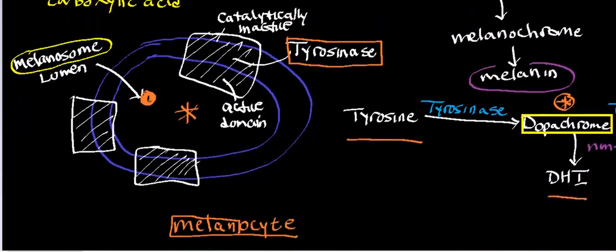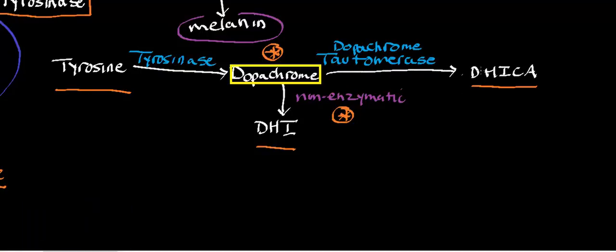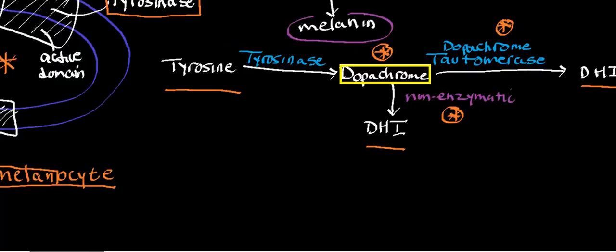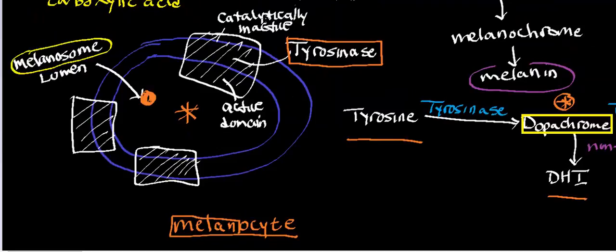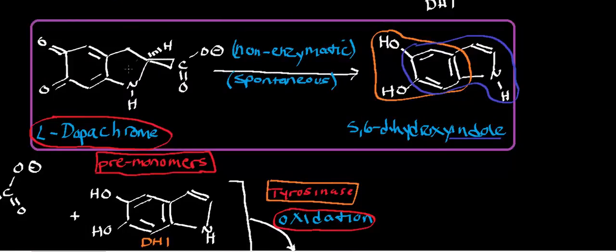That's the reaction in which we go from dopachrome to one of our premonomers, dihydroxyindole. We also have another reaction catalyzed by dopachrome isomerase or dopachrome tautomerase, in which we go to the other product, dihydroxyindole carboxylic acid. The synthesis of this molecule and the mechanism of dopachrome tautomerase will be the subject of the very next video. All of these reactions occur inside the melanosome of the melanocyte. In another video we'll look at how the keratinocyte actually gets the melanin. I hope this video gave you intuition on the synthesis of dihydroxyindole from L-dopachrome — remember, this reaction is non-enzymatic and classified as spontaneous. See you in the next video.